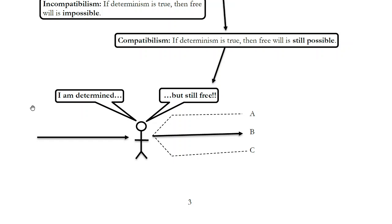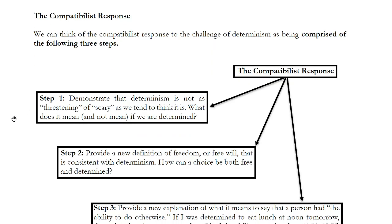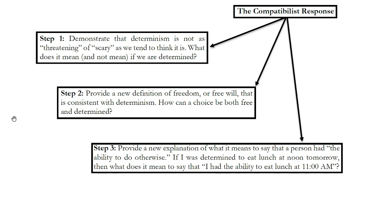In order to understand the compatibilist approach, which initially seems very counterintuitive, we need to address three separate questions. The first thing the compatibilist wants to do is demonstrate why determinism is not so scary — not so threatening. Initially, the idea that everything we do is determined by the past seems disquieting, alienating, threatening or scary to our conceptions of ourselves and of human beings.